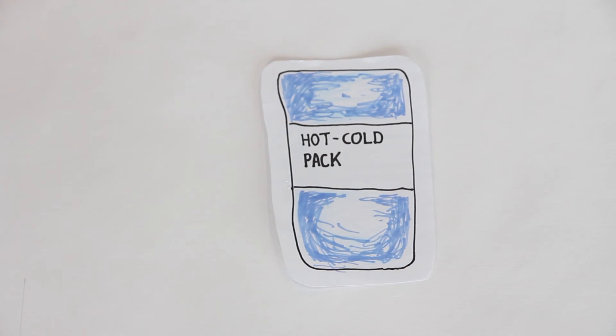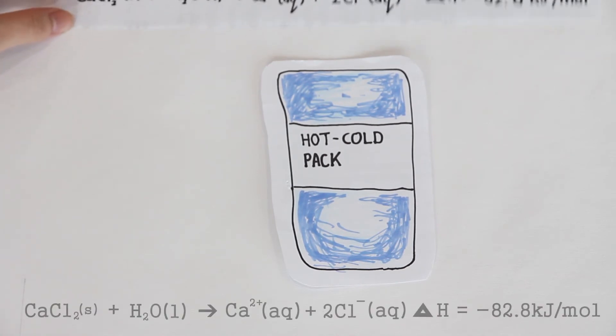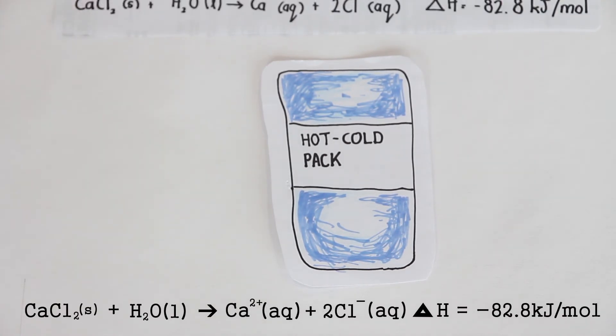The reaction can be expressed in this chemical equation. Calcium chloride plus water will equate to calcium ions and 2 chloride ions, having an enthalpy change of negative 82.8 kJ per mole, indicating that it is an exothermic reaction. 82.8 kJ of heat energy is released when calcium chloride salt is dissolved in water.